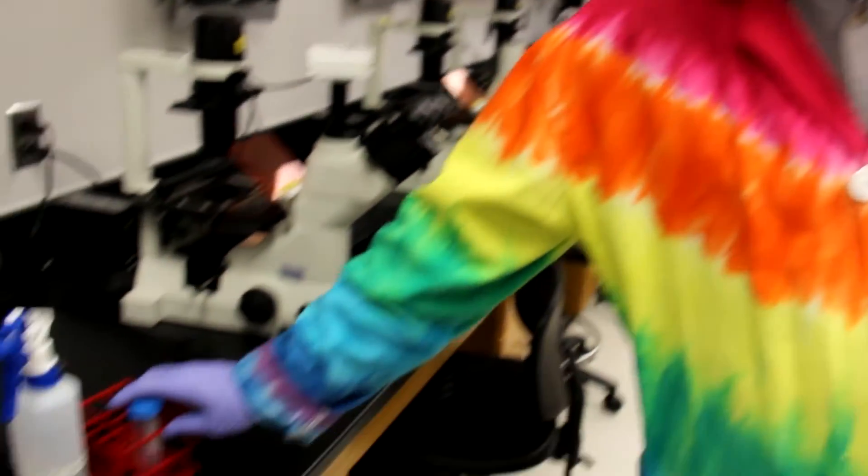Today we're going to be working through the process of splitting cells. For a first step we need to prepare the materials we're going to use in that process, and that includes the media that we're going to add on to the cells, as well as the cells themselves. Now the media I've got ready to go right here. We're going to now go and collect our cells.